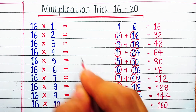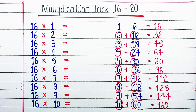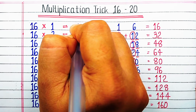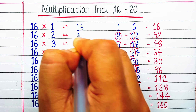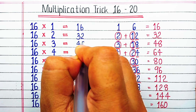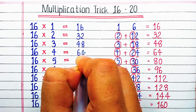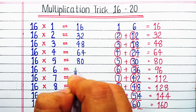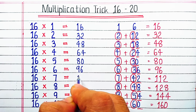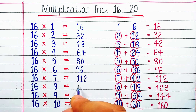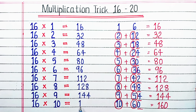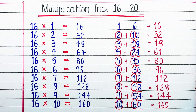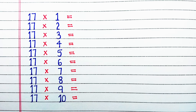With this we have got the trick for the table of 16. So let's start writing: 16×1=16, 16×2=32, 16×3=48, 16×4=64, 16×5=80, 16×6=96, 16×7=112, 16×8=128, 16×9=144, 16×10=160.